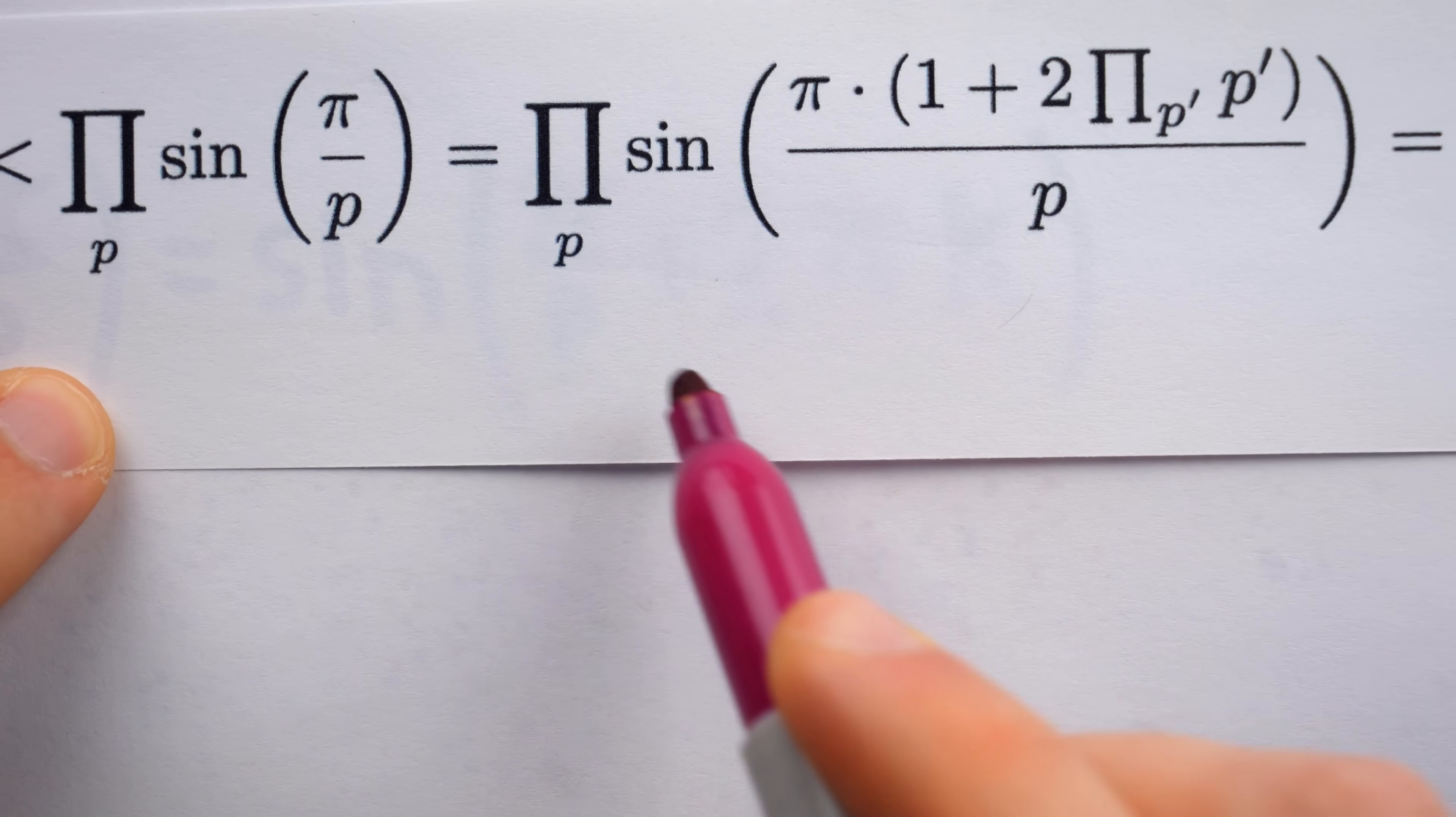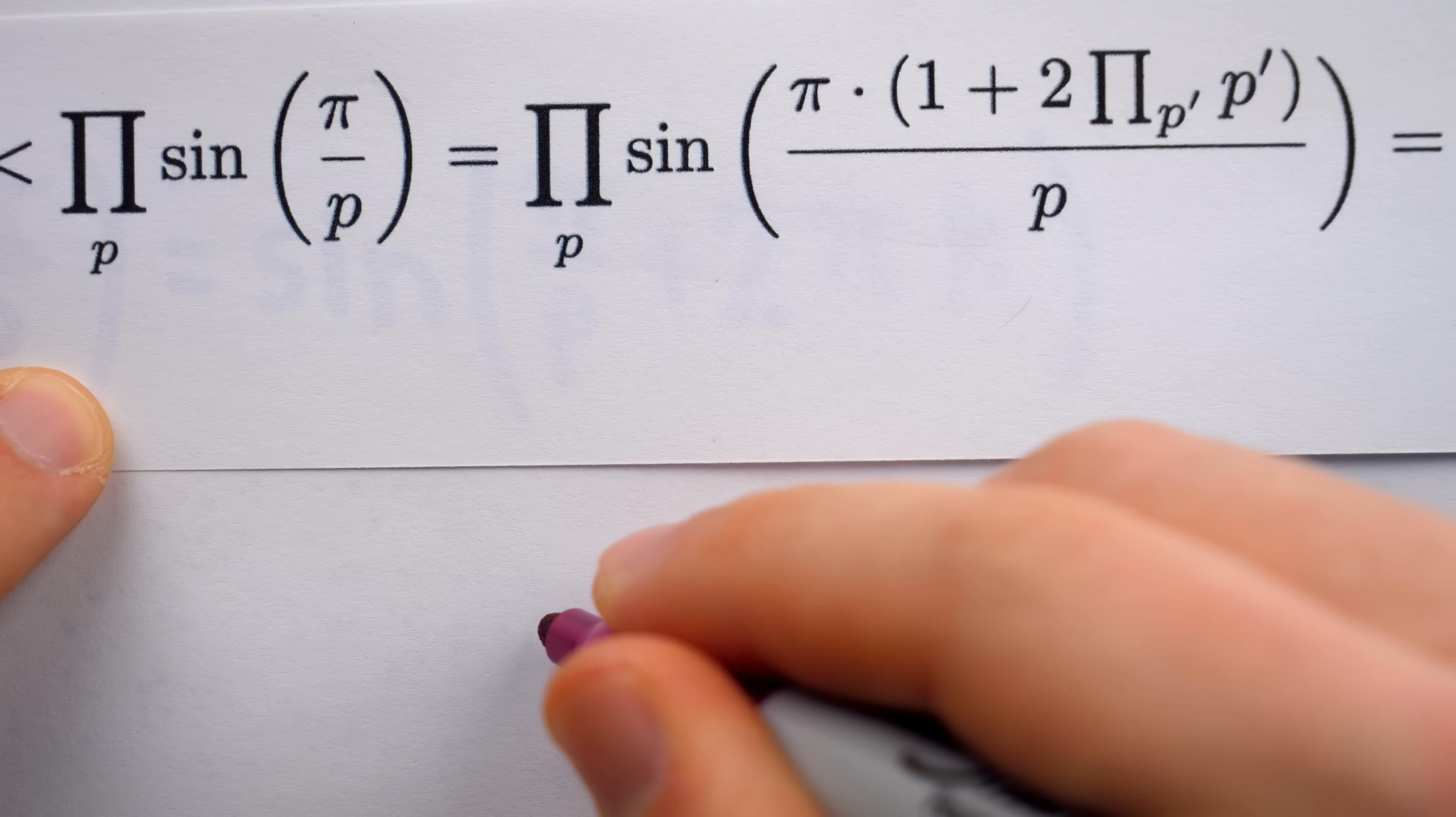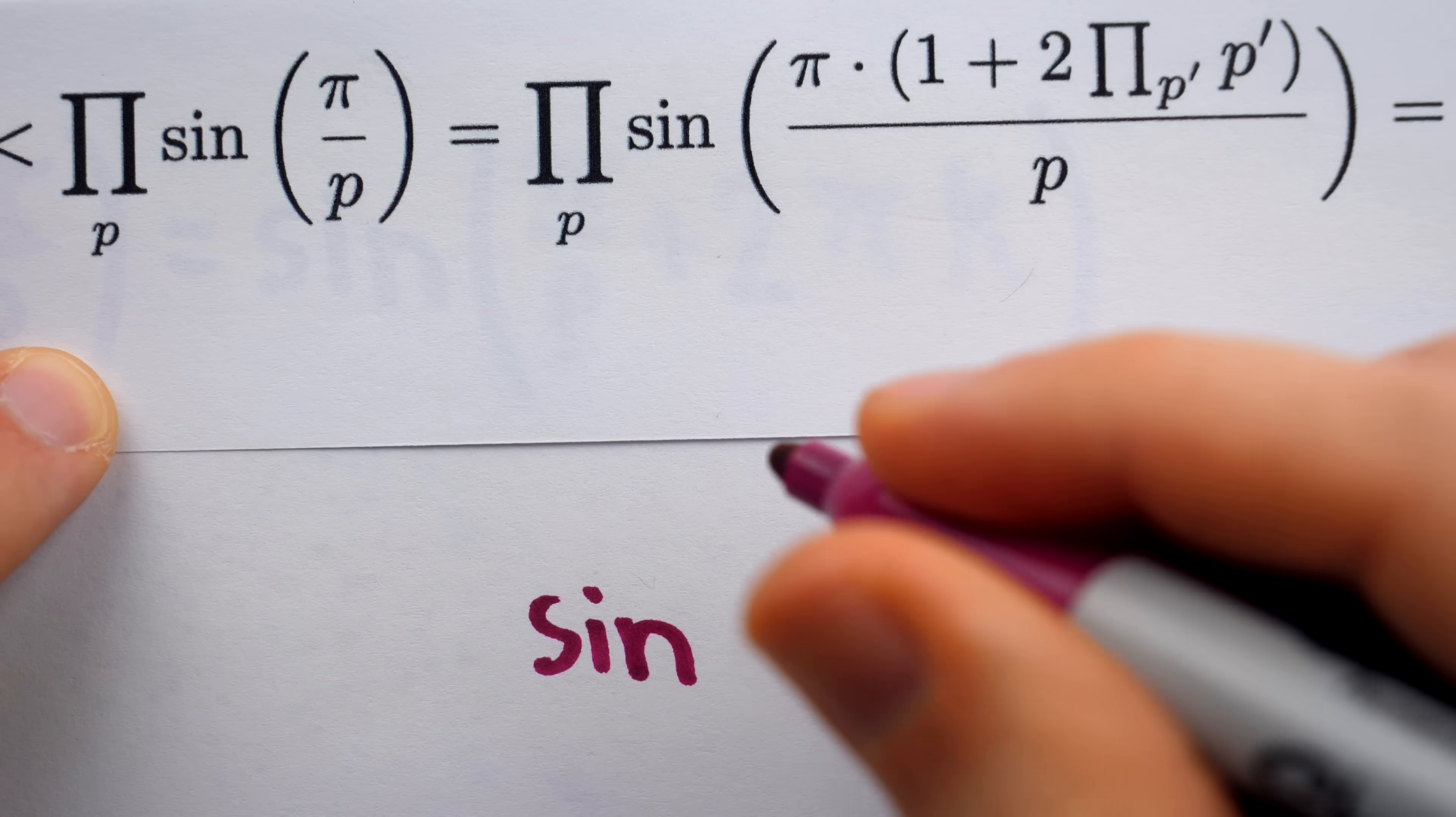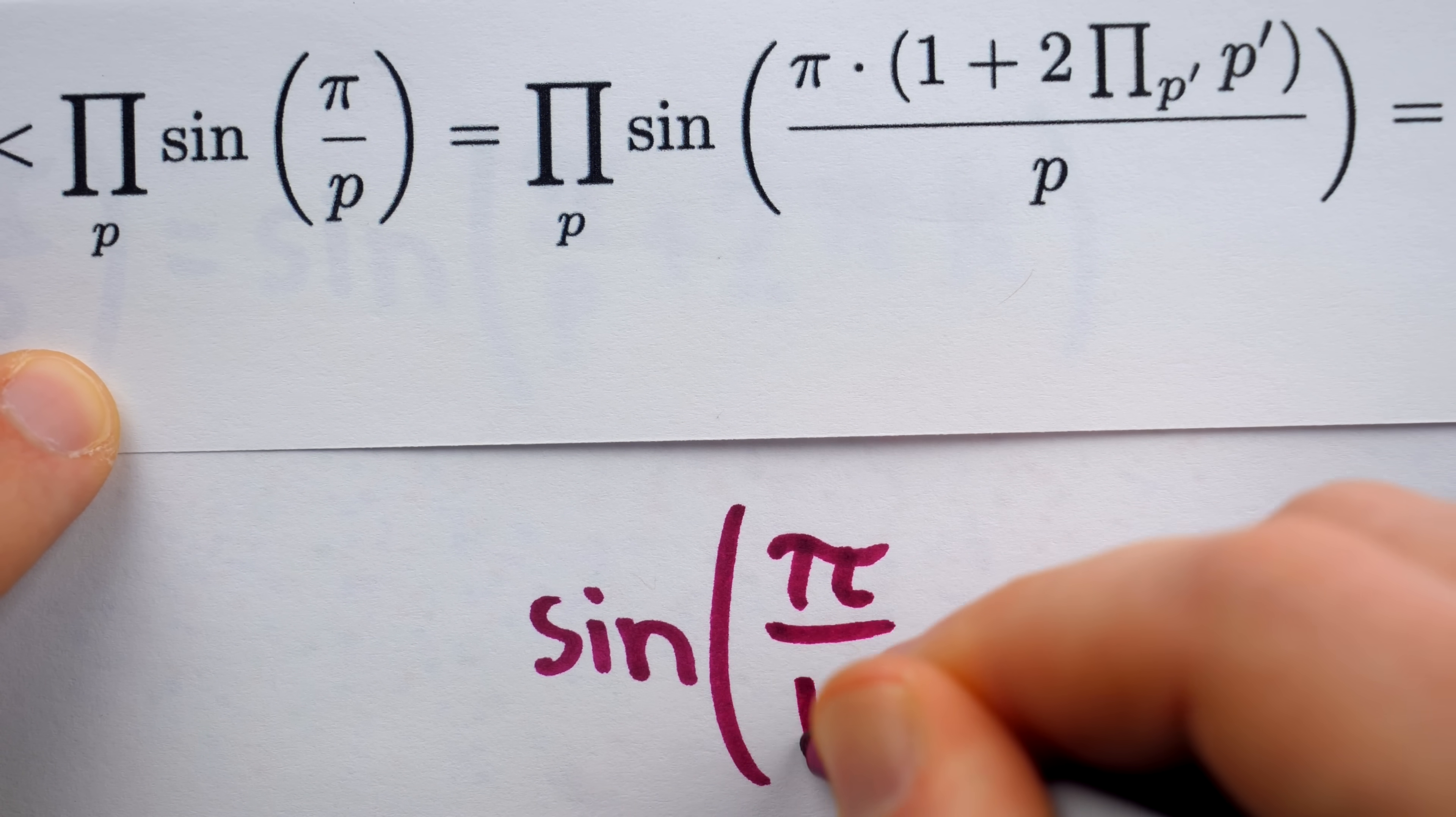Distributing the pi, this expression within the product becomes sine of pi times 1 over p, so that's sine of pi over p.